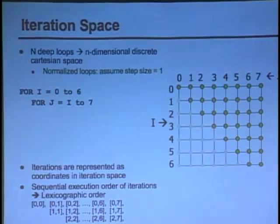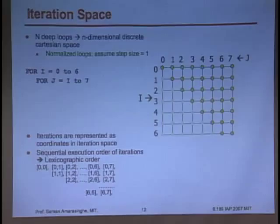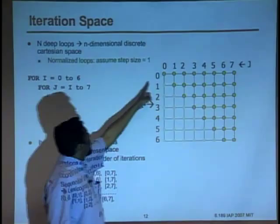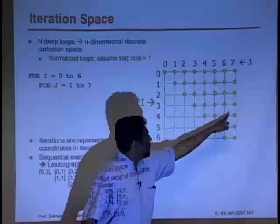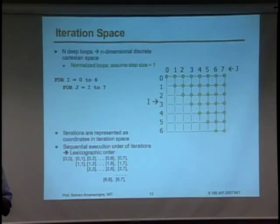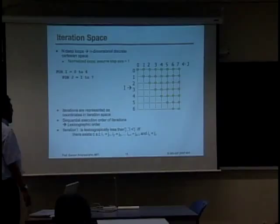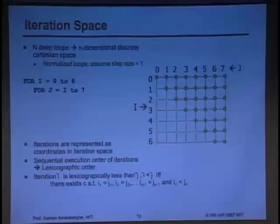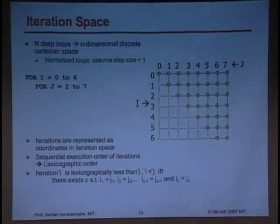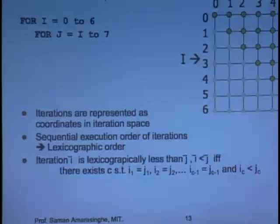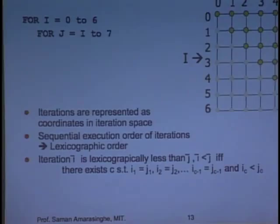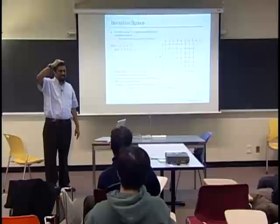There's a notion called lexicographic ordering — the order you visit iterations when executing the loop. If you execute this loop, you go from j going through the points, and that's the lexicographic ordering. That's the normal sequential execution order. When you have multiple dimensions and compare two iterations, you go to the first dimension where the numbers differ between the two iterations, and that dictates which is lexicographically less than the other.